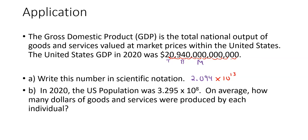Now in that same year, the U.S. population was 3.295 times 10 to the 8th, a little over 329 million people. It says on average, how many dollars of goods and services were produced by each individual? And of course that's an average. It's not really for each individual person because 329 million people includes 3 and 4 year olds who probably were not doing a lot of work. It also includes a lot of 80 year olds who are probably not getting up and going to work every day. So goods and services produced, it's just a number that gives you the total GDP divided by the population.